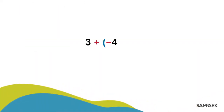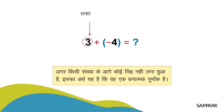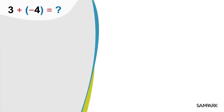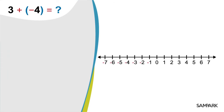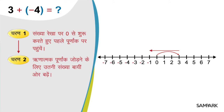Ab 3 plus minus 4 ka maan pata karte hain. Ek baat yaad rakhna: agar kisi sankhya ke aage koi chinh nahi laga hua hai, iska arth hai ki wo ek Dhanatmak Poonank hai. Jaise yahan 3 Dhanatmak Poonank hai aur 4 ke pehle minus laga hai, yani ye ek Rinatmak Poonank hai. To pehla Poonank kya hai? Bilkul thik — 3. To 0 se 3 tak badhte hain. Ab hamein minus 4 jodna hai, to 3 se kis or badhenge? Shabash — hum 3 se 4 kadam baayin or badhte hain: 3 se 2, 2 se 1, 1 se 0, aur 0 se minus 1. Yani 3 plus minus 4 hua minus 1.